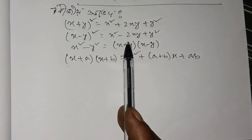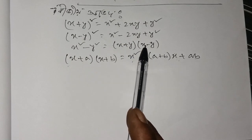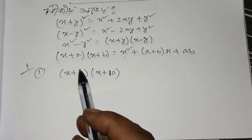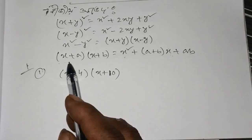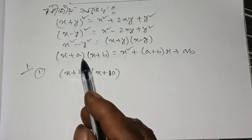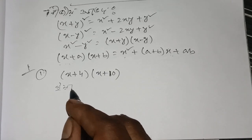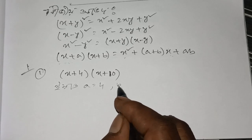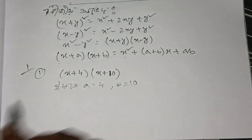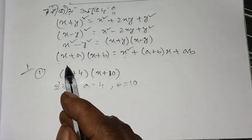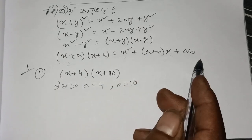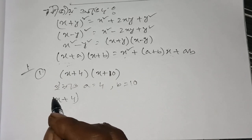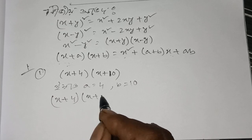So, given this formula, let's take the first number: x plus 4 whole into x plus 10. We use the identity, so a equals 4 and b equals 10. Now let's apply the formula x plus a into x plus b.